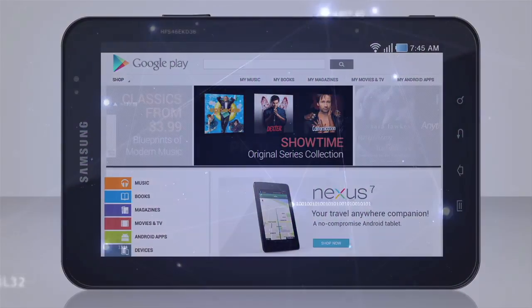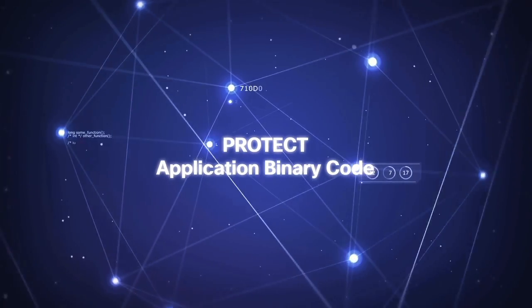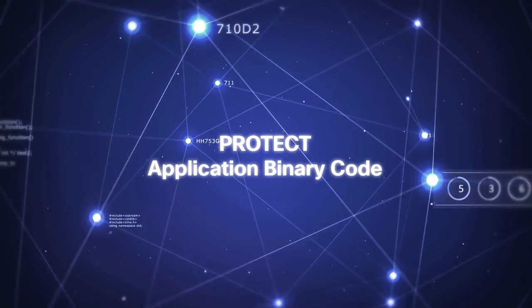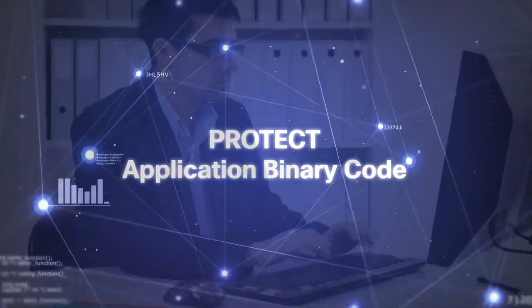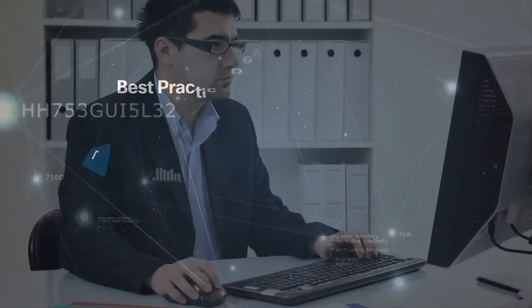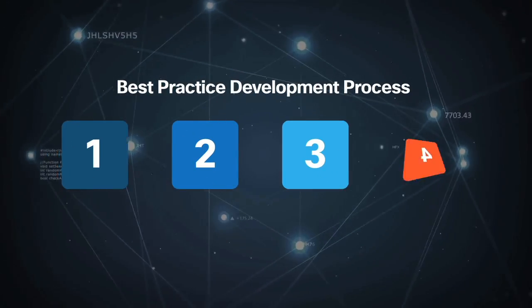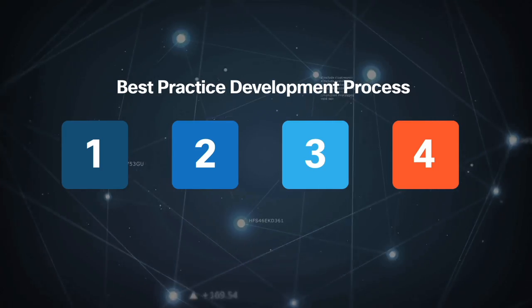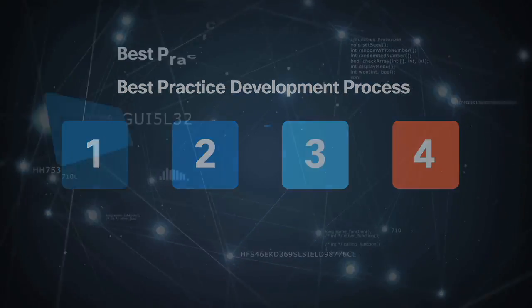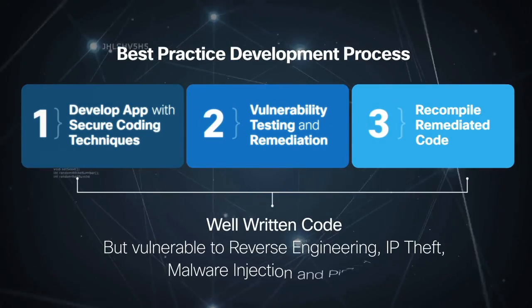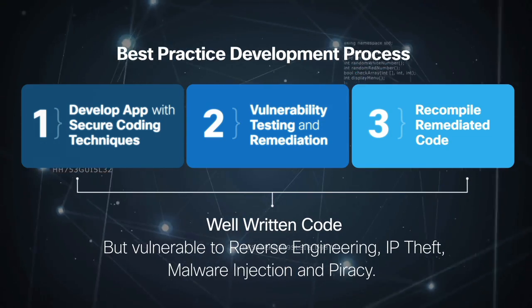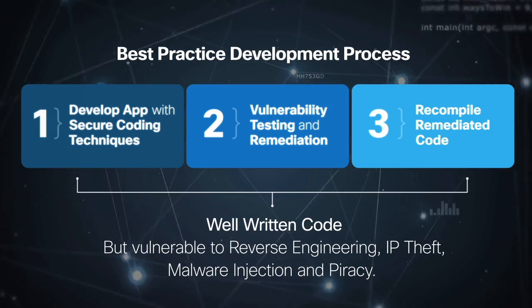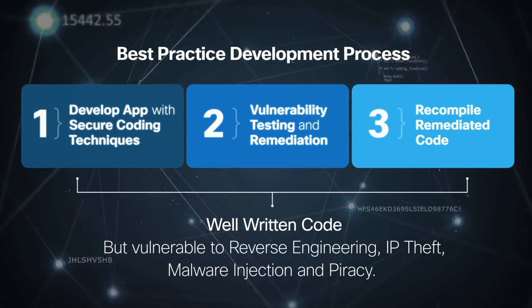It's critical to protect application binary code, and that's exactly what the experts are saying. The best practice application development process involves these critical steps to harden and tamper-proof your application. If you simply follow traditional development processes and don't harden your application, it is susceptible to binary attacks.